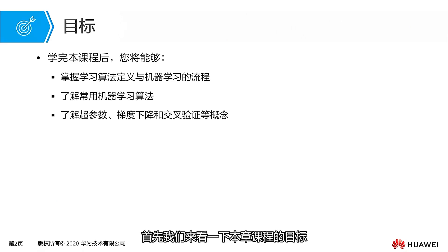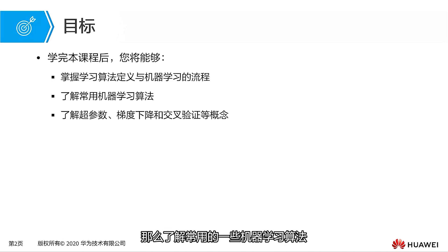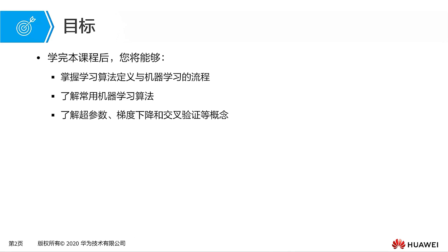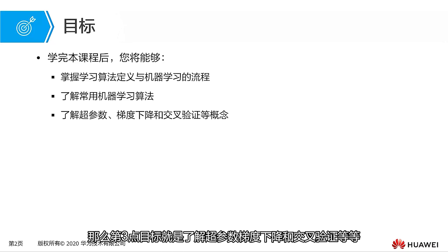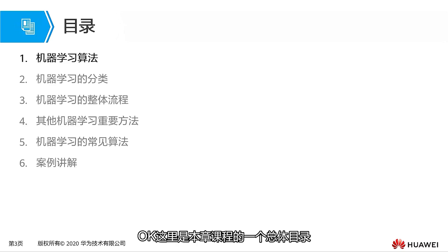First, let's look at the goals of this chapter. After completing this chapter, I hope all students will be able to master the definition of machine learning algorithms and the general process of machine learning. Understanding commonly used machine learning algorithms is very important, as we will introduce many in later lessons. The third goal is to understand hyperparameters, gradient descent, cross-validation, and other important and commonly used concepts in machine learning.